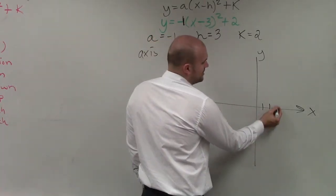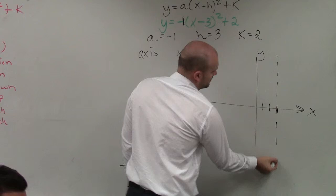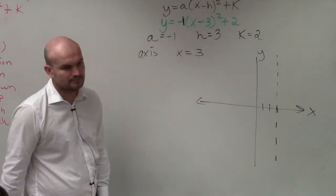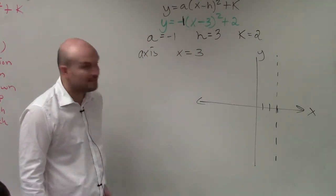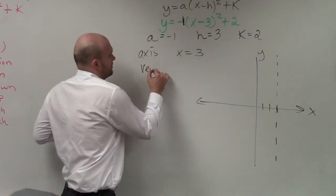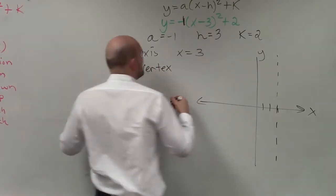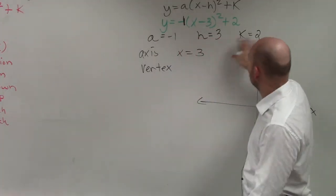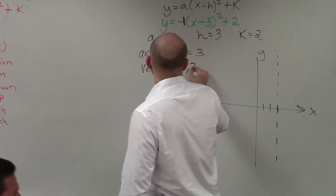So x equals 3. I go to 3. And I make my vertical line. Now, the next thing we need to do is identify the vertex. So when I identify the vertex, remember the vertex is h, k, right? So identify the vertex as 3, 2.